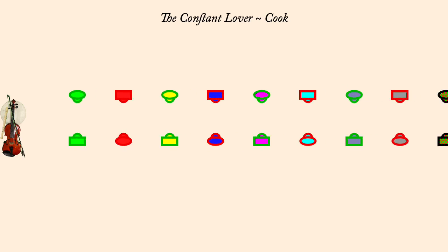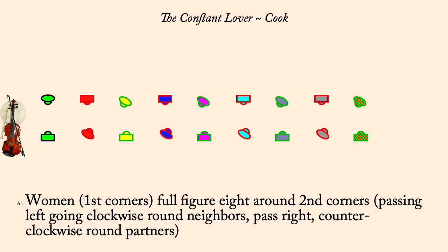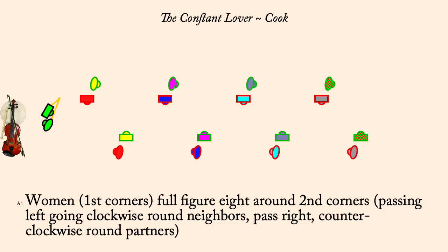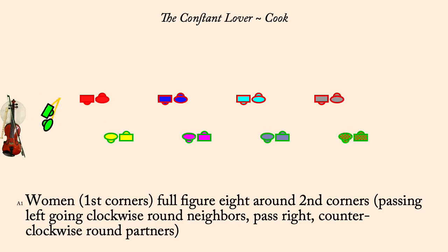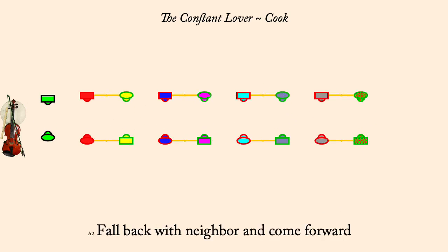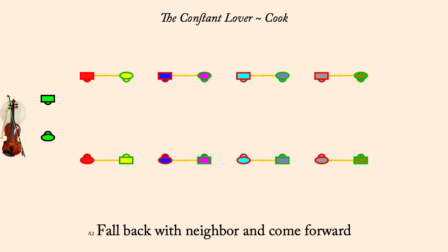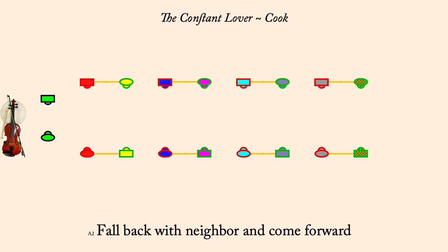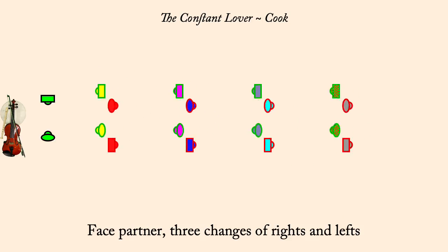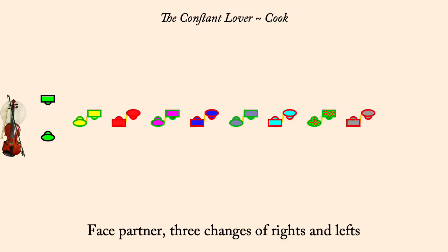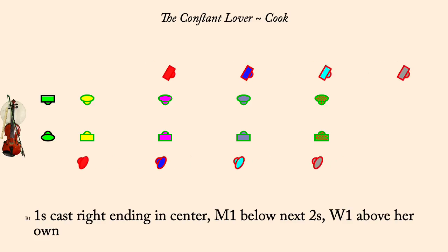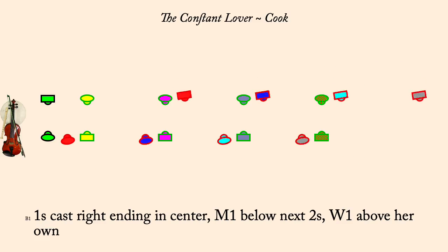First corners, full figure eight around second, starting with neighbor. Fall back with neighbor, come forward. Three changes of rights and lefts. One's cast right into center, man one below next twos. Circle left.